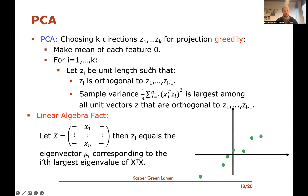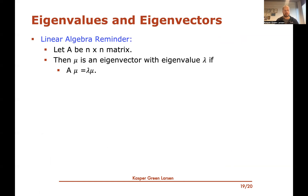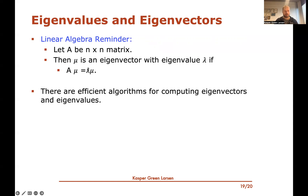As a reminder: for an n-by-n matrix A, an eigenvector mu with eigenvalue lambda satisfies A times mu equals lambda times mu — the vector scales to a copy of itself when multiplied by the matrix. There are many efficient algorithms for computing eigenvectors and eigenvalues. So these eigenvectors corresponding to the k largest eigenvalues of X^T X are the vectors we should pick as our basis in PCA.